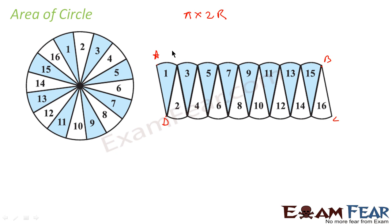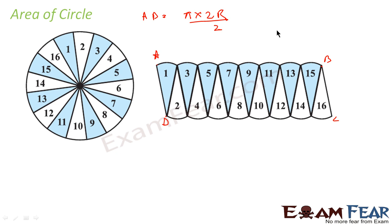So, a,b will be half of this. Since a,b plus c,d was pi into 2r — that is the perimeter of the circle — a,b will be half of this because a,b is equal to c,d. So a,b is nothing but πr.